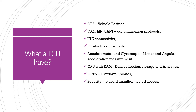What does a typical TCU have? Any TCU is essentially a small-sized CPU with RAM, which enables it to collect, store, and analyze data. It will also have GPS to sense the vehicle position, communication protocols like CAN, LIN, and UART to collect data, LTE or other network connectivity, Bluetooth connectivity, accelerometer and gyroscope to measure linear and angular accelerations, FOTA for firmware updates, and security modules to avoid unauthorized authentication.